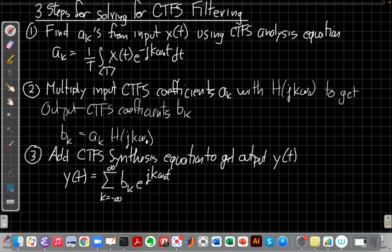So those b_k's we just found are the recipe, we like to say, the coefficients for making the output y(t). And so we plug them into this equation and add them up. Take each b_k, multiply it by a corresponding complex exponential, and then add these and simplify, often using Euler's relationships to get the output y(t).